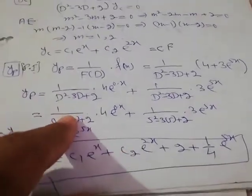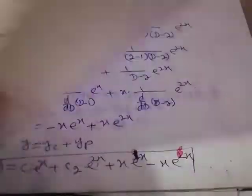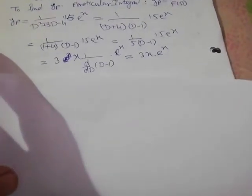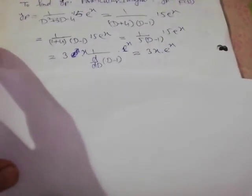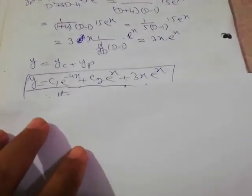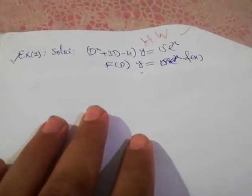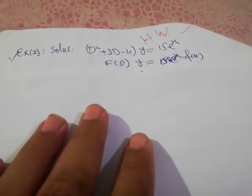Now we discuss the failure case — when f(D) becomes zero upon substitution. Consider another problem: (D² + 3D − 4)y = 15e^x.